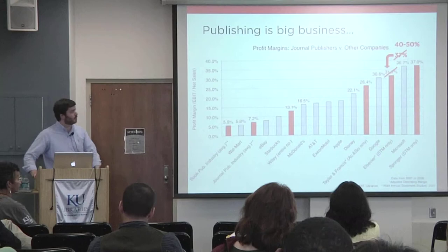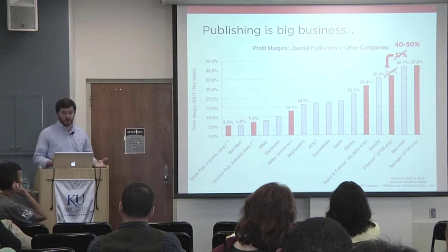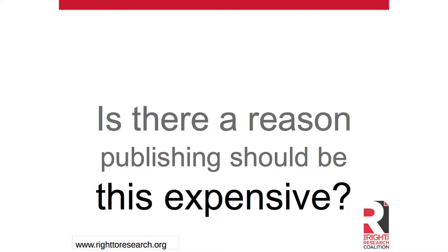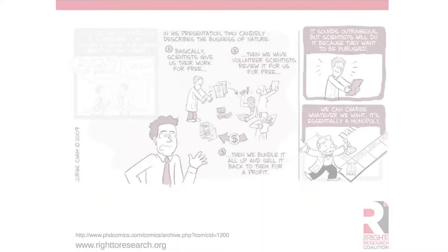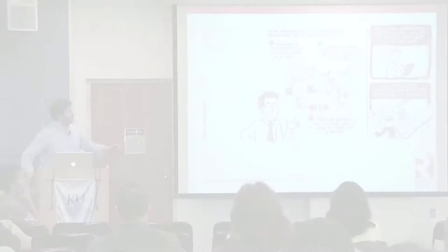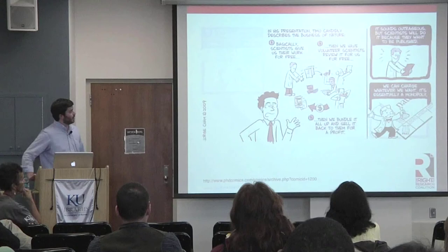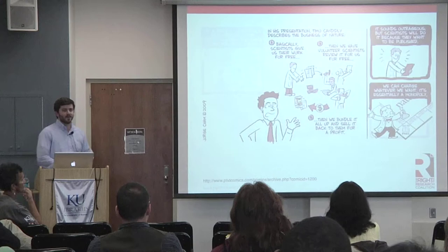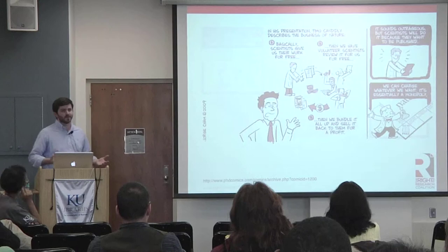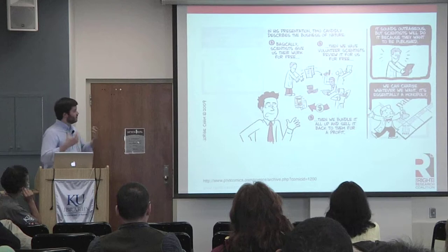The natural question is: is there a reason publishing should be this expensive? Is there something about academic publishing that just inherently makes it more expensive? I think the answer is a resounding no. As this comic illustration from PhD Comics shows, researchers are never paid for their work. In fact, in many cases — particularly in STEM fields — researchers actually pay the journals to publish, even in subscription-based journals, paying for things like extra pages or color figures. Then you turn around and do peer review for free as well — that's donated labor to these academic journal publishers.